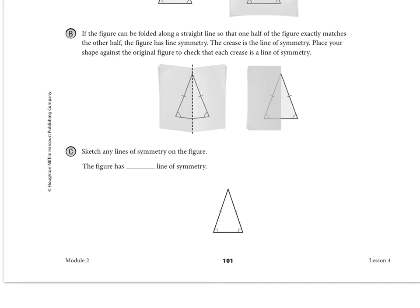For part C it says sketch any lines of symmetry on this figure. This is just going to be one straight line that goes right through the middle. So this one only has one line of symmetry.